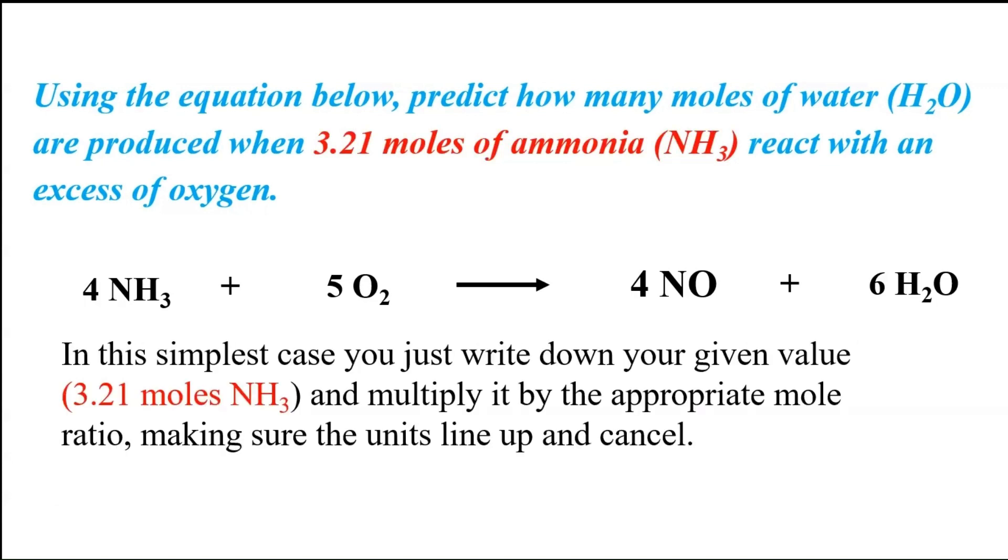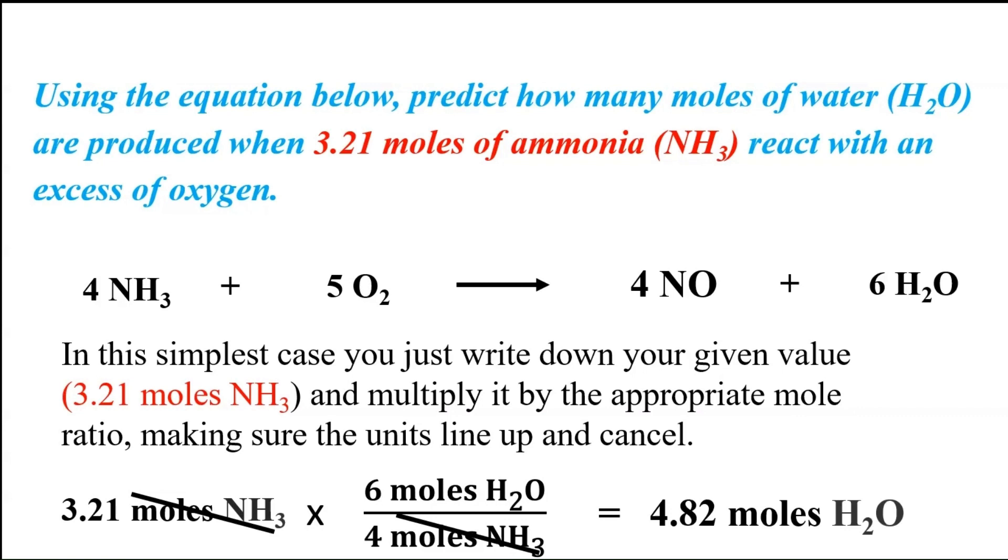So in the very simplest case, there are some stoichiometry problems that are like this, that everything's in moles. And if that's the case, you're just going to write down your given value, which is 3.21 moles of NH3, and multiply it by the appropriate mole ratio, just making sure it lines up and cancels. The given value has the units of moles of NH3, so we're going to want to make sure and put moles of NH3 in the denominator. We cancel everything out. We say 3.21 times 6, hit equals and then divide by 4. And we're going to have 4.82 moles of water.